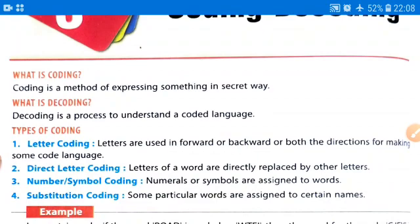So you might be getting some idea of coding and decoding. In this chapter we have some types of coding: first is letter coding, second is direct letter coding where we directly use the letters, third is number symbol coding, and fourth is substitution coding.